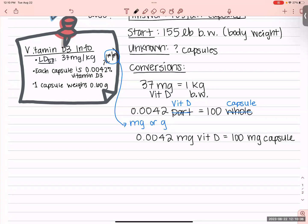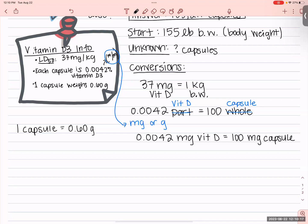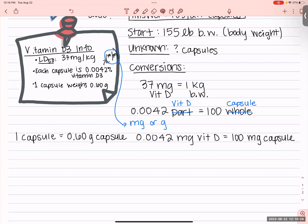Then we have our capsule conversion. One capsule equals 0.60 grams of capsule. Note: it's not that one capsule contains 0.60 grams of vitamin D — it's that the whole capsule weighs 0.60 grams, including vitamin D, other oils, the capsule coating, everything.